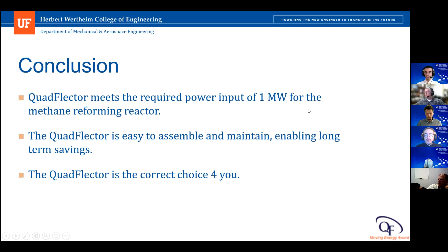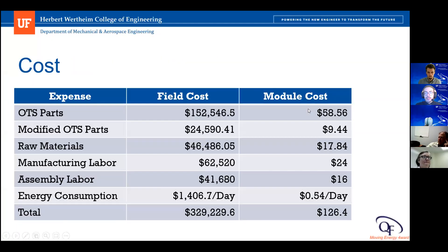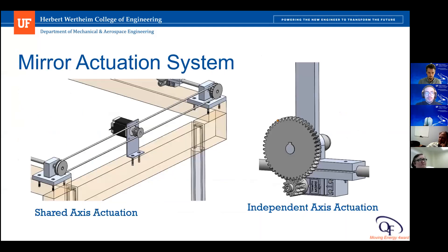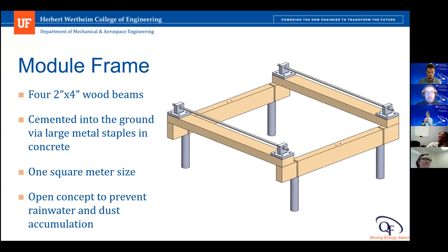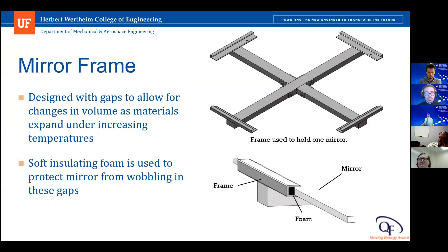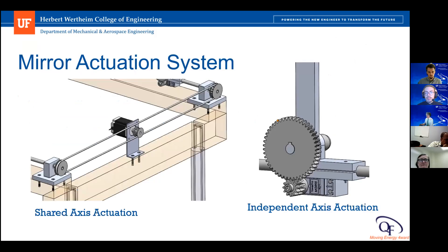When looking at your hedgehog concept, you talked about low cost, rapidly prototyped plastic parts using 3D printing to cut manufacturing time and cost. Which of your parts are you planning to 3D print? We plan on 3D printing our mirror frame, since it's made out of ABS plastic, as well as our housing for the electronics, which is mounted underneath the wooden frame.